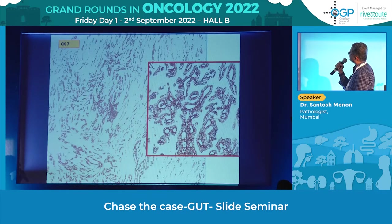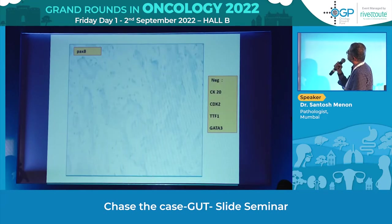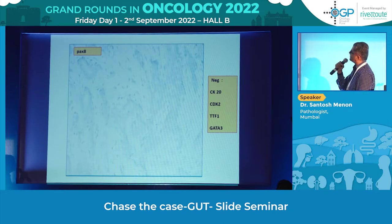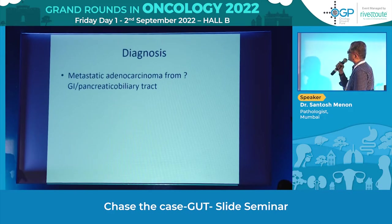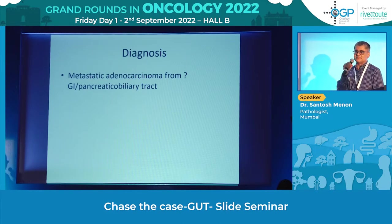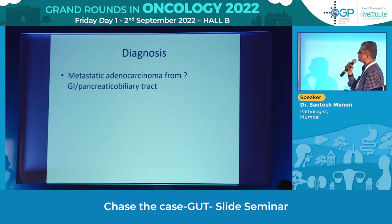We did CK7 on the biopsy — it was strongly and diffusely positive. CK19 was positive, PAX8 was dead negative. Other negative markers were CK20, CDX2, TTF1, GATA3. With CK7 and CK19 positive, someone thought it's a GI or pancreatic-biliary primary. But that's a common mistake — CK19 comes in almost every tumour: breast is positive, thyroid is positive, ovary is positive. So CK19 does not specifically point to pancreatic-biliary tract.